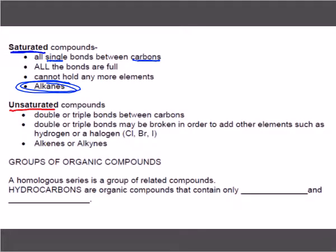Unsaturated means there's room to take in other elements. If they have a double or a triple bond between carbons, they can take in other elements. You can break those double or triple bonds, and you can add other things like hydrogen, or any of your halogens like bromine, chlorine, fluorine, or iodine. Alkenes and alkynes are unsaturated.